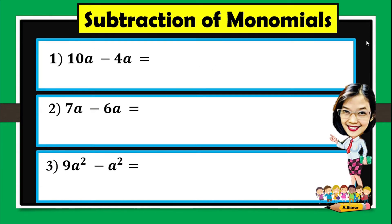This lesson is about subtraction of monomials. Simply subtract the numerical coefficient: 10 minus 4 is 6, and copy the given variable which is a, so the answer is 6a. Number 2: 7a minus 6a — 7 minus 6 is 1, and copy the given variable which is a. However, if the numerical coefficient is 1, you don't need to write it.